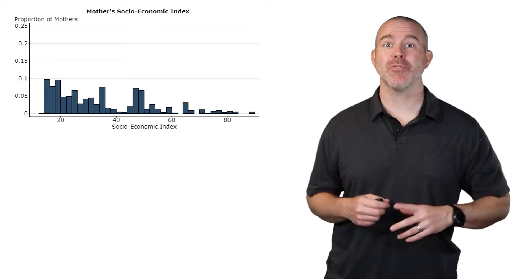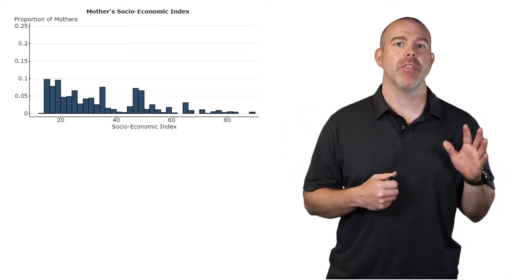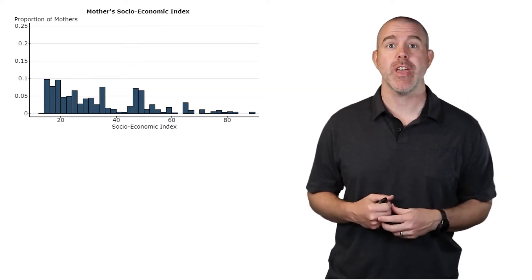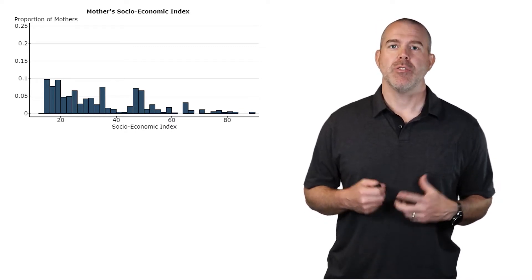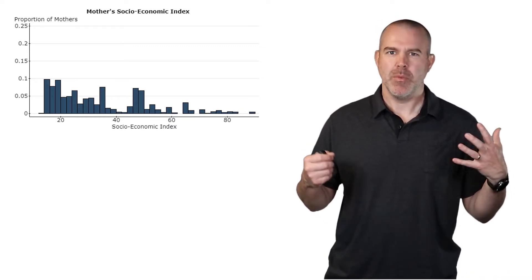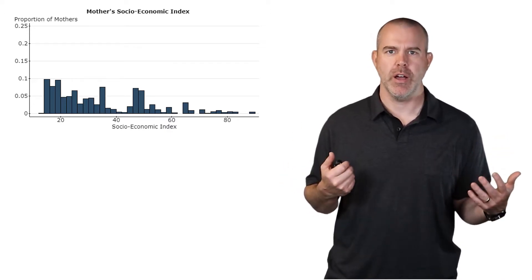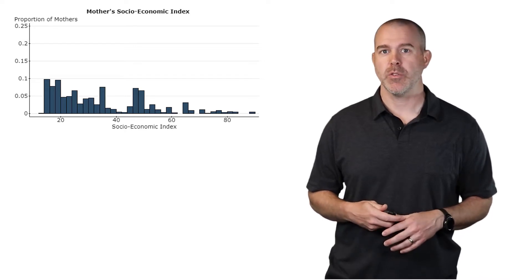You know the drill by now. We're going to introduce this idea by way of an example. I have up here the mother's socioeconomic status from our Children of Immigrants database. I'll put that link in the description. Socioeconomic status is like income and wealth. There's this rating in that database, I believe it's from zero to 100. You can see the distribution, very skewed right.